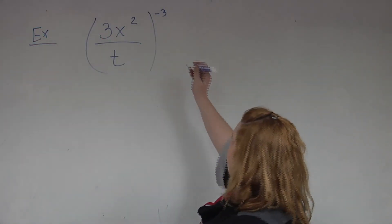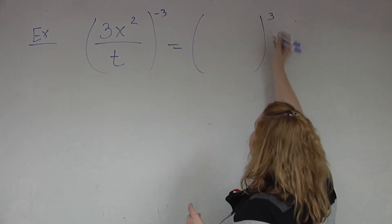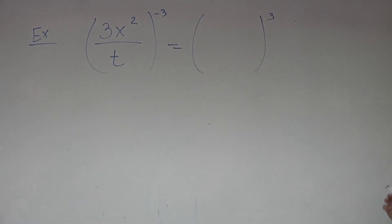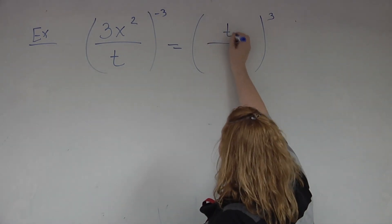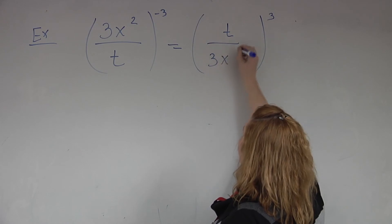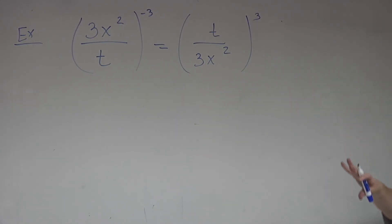So on this one, the first thing I'm going to do is I'm going to change my negative 3 to a positive 3. Which means everything inside that parentheses is going to flip. The denominator will become the numerator. The numerator will become the denominator.